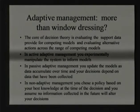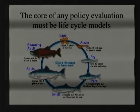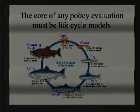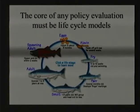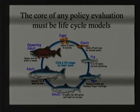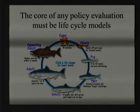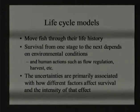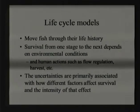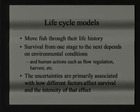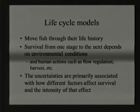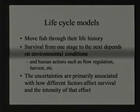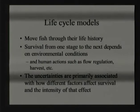The core of any policy evaluation for fish has to be life cycle models. You simply have to consider the factors that affect survival through the entire life. You can't just look at one stage in the life history and one factor. You have to evaluate how much different factors affect survival through different stages and potentially how those interact. Life cycle models move fish through their life history, calculating survival from one stage to the next depending upon environmental conditions — natural conditions like temperature, and human actions such as flow regulation or harvest.